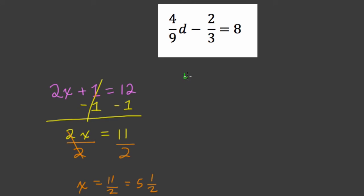So watch what happens. I have 4 ninths d minus 2 thirds equals 8. So my first step here with this coefficient, since we're subtracting it, is to add it to both sides. And what this really is doing is isolating the variable. It's getting the variable d all by itself, so we can find out what its value is.